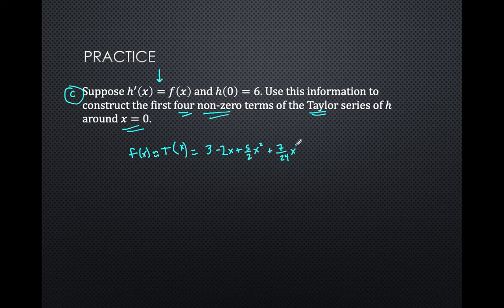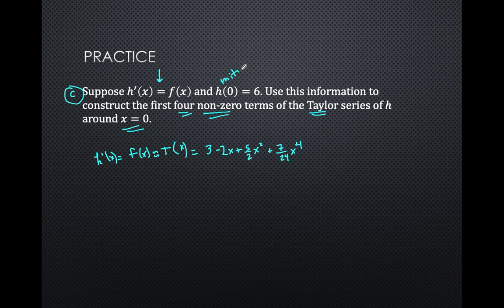So, use this information. Again, I need first non-zero, first four non-zero. Taylor has to be followed with center. So, what are they telling me here? They're giving me H prime is F of x. I don't know what F of x is, but I know F of x approximator. So, I know the approximator. Now, what are they telling me? They're telling me this is equal to H prime of x. But then, they're also giving me information, not about H prime, but of H.